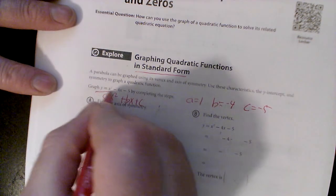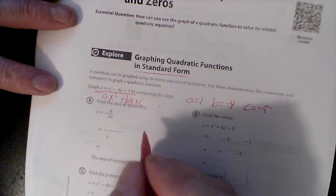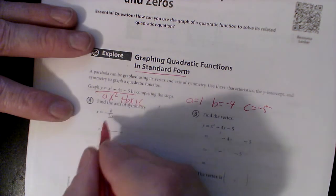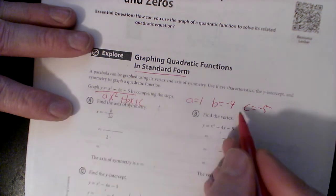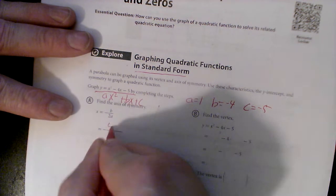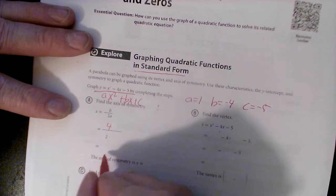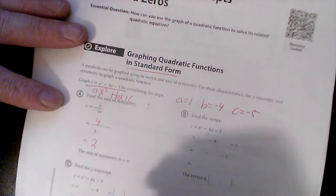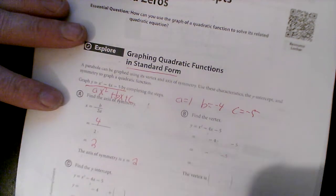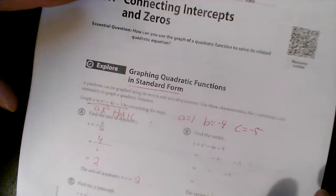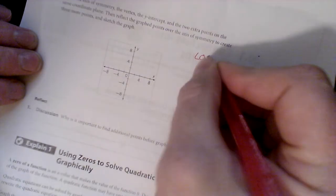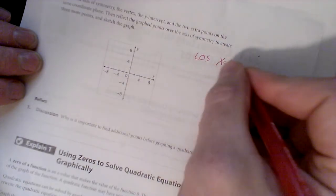We're gonna be using this line right here, so line of symmetry we did this a couple days ago. It's negative b over 2a, so it's negative negative 4, which is positive 4, over 2 times 1, which is 4 divided by 2 is 2. So the line of symmetry is x equals 2, that's that line down the middle of your graph.